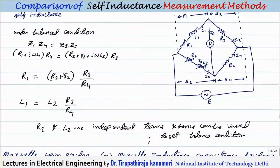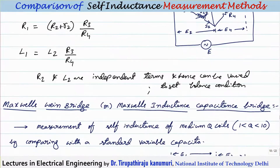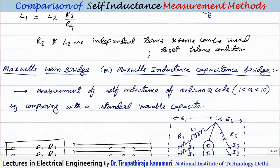The disadvantage of this bridge is that as two coils are present, flux leaking from one coil will link with the second coil, creating interference or mutual inductance effects. Shielding is a very difficult task, which is why this bridge is not used in practice.